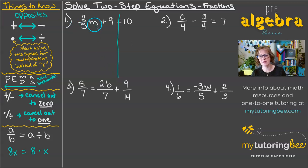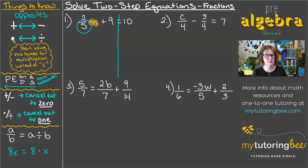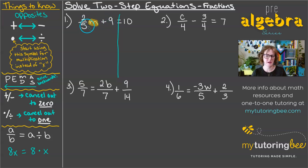So let's identify where our variable is. Here we have m, and what's happening with m? Well, m is being multiplied times this fraction, and then also 9 is being added to that m term. So those are the two things that I want to undo.